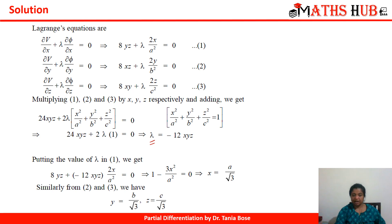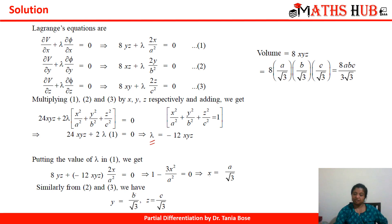Substituting λ = −12xyz back into equations 1, 2, and 3, we calculate x = a/√3, y = b/√3, and z = c/√3. The maximum volume of the rectangular parallelepiped, which we assumed to be 8xyz, is therefore 8abc/(3√3). This is the largest volume of the rectangular parallelepiped inscribed in the ellipsoid.